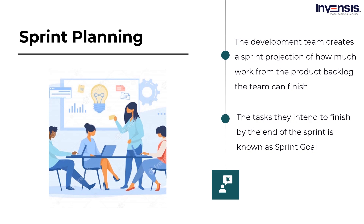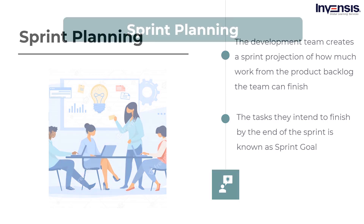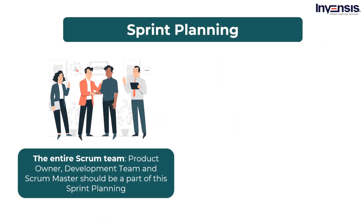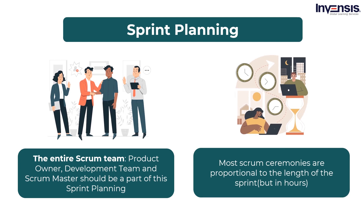This volume of work is added to the sprint backlog. During sprint planning, the team should discuss and create a sprint backlog that includes all of the tasks they intend to finish by the end of the sprint, which is known as the sprint goal. This goal needs to be agreed upon by the entire team. The entire Scrum team — product owner, development team, and Scrum master — should be part of sprint planning. Most Scrum ceremonies are proportional to the length of the sprint. For sprint planning, the meeting should be twice as long as the sprint in hours. For example, if the sprint is one week, then sprint planning should be around two hours, and if the sprint is two weeks, then sprint planning should be around four hours.